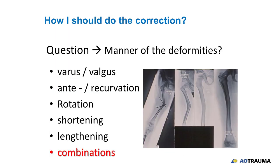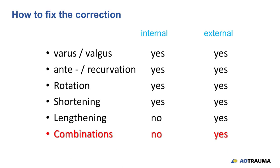The manor of deformity — varus, valgus, antecurvation — we know in children, because of growth, there is mostly a combination, so please do not make a correction addressing only one plane. For fixation options: varus/valgus can be treated with monolateral internal or external fixation, acutely with a plate or with an external fixator. Rotation and shortening are similar. Lengthening is similar. But if we have combined deformities, external fixation is mostly more adequate.